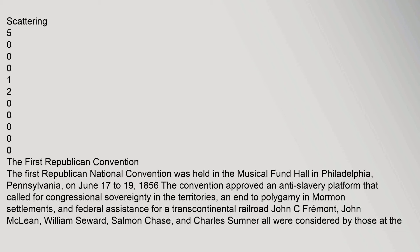The first Republican National Convention was held in the Musical Fund Hall in Philadelphia, Pennsylvania, on June 17–19, 1856. The convention approved an anti-slavery platform that called for congressional sovereignty in the territories, an end to polygamy in Mormon settlements, and federal assistance for a transcontinental railroad.